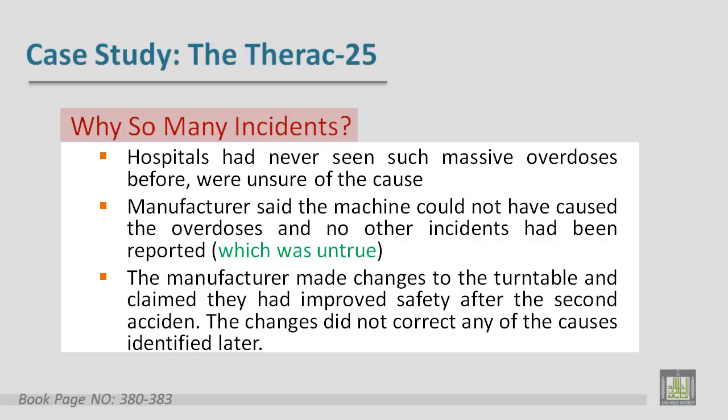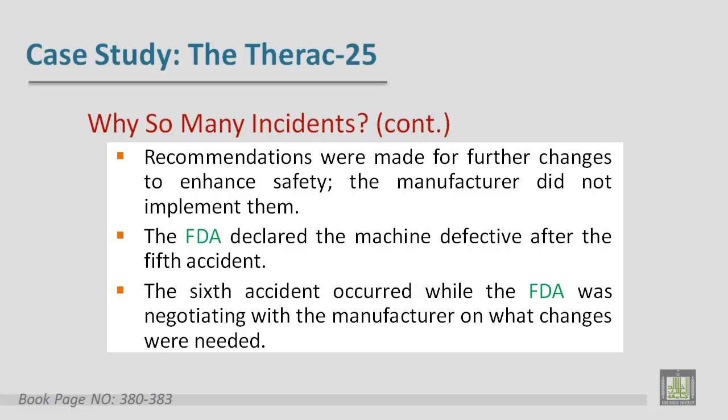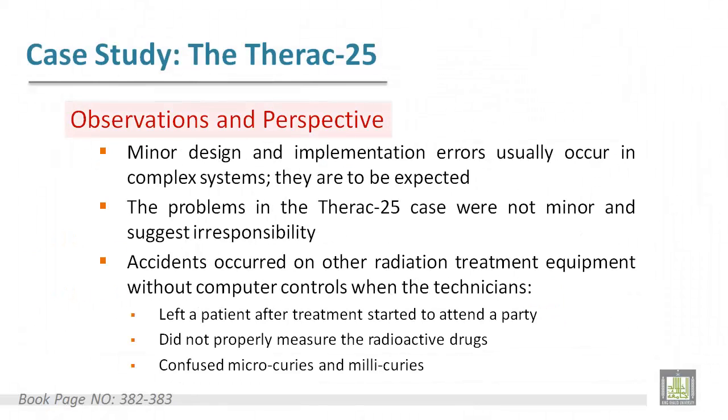The manufacturer made changes to the turntable after the second accident and claimed they had improved safety, but the changes did not correct any of the causes identified later. Recommendations were made for future changes to enhance safety, but the manufacturer did not implement them. The FDA declared the machine defective after the fifth accident, yet the sixth accident occurred while the FDA was still negotiating with the manufacturer on what changes were needed.